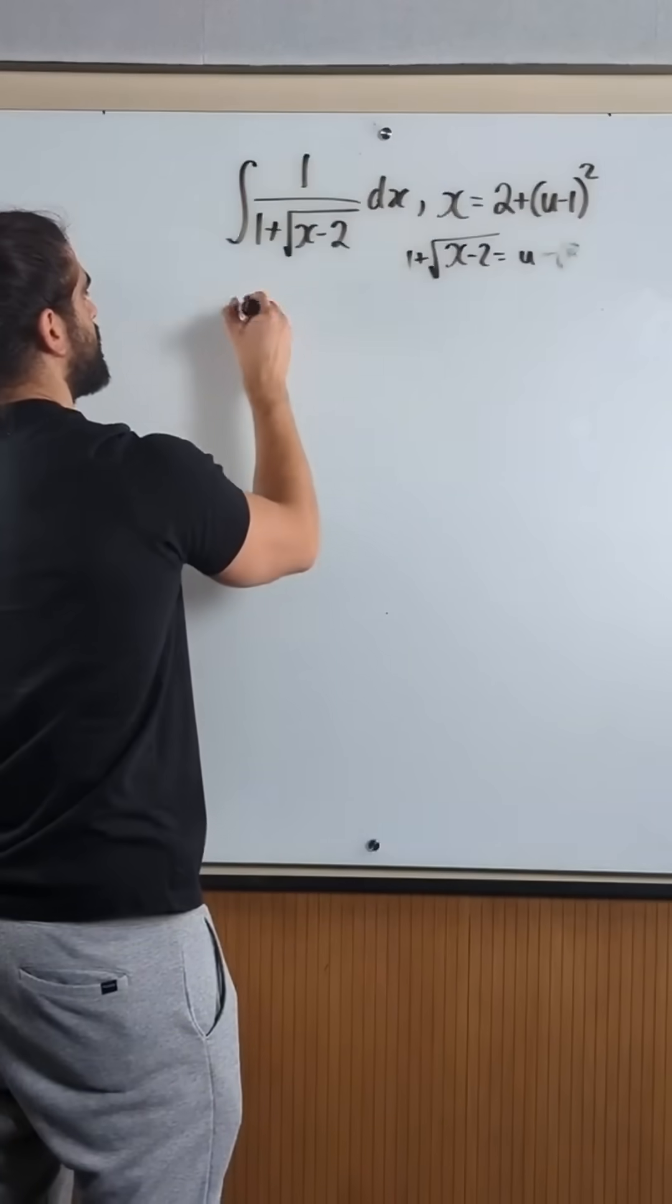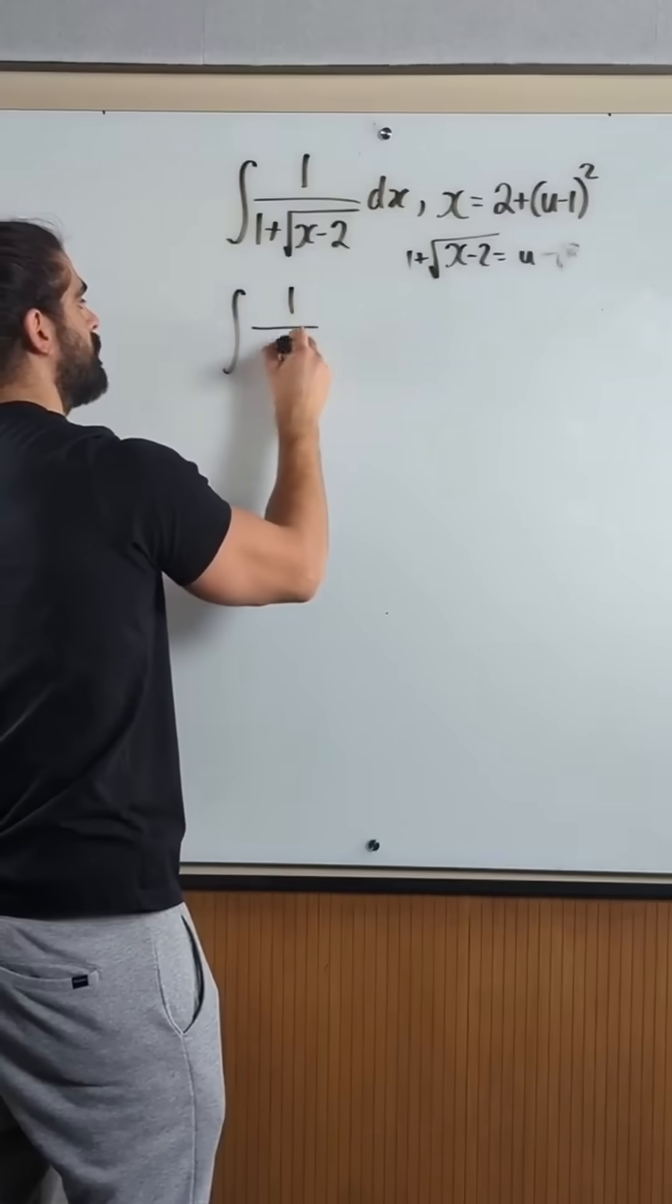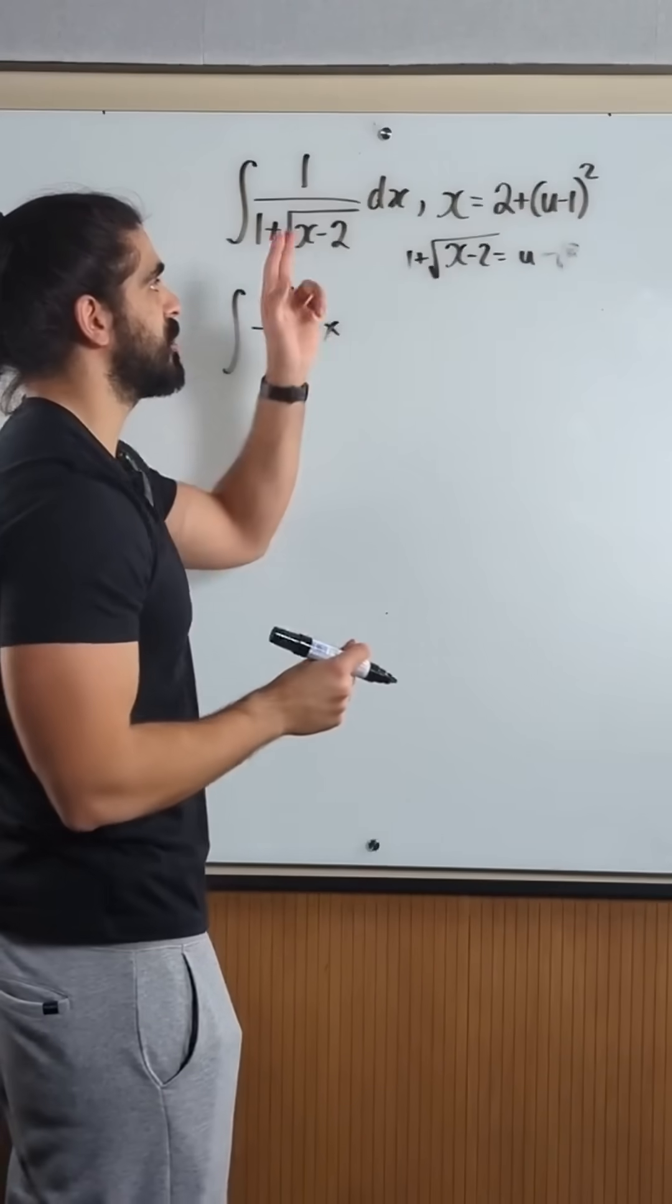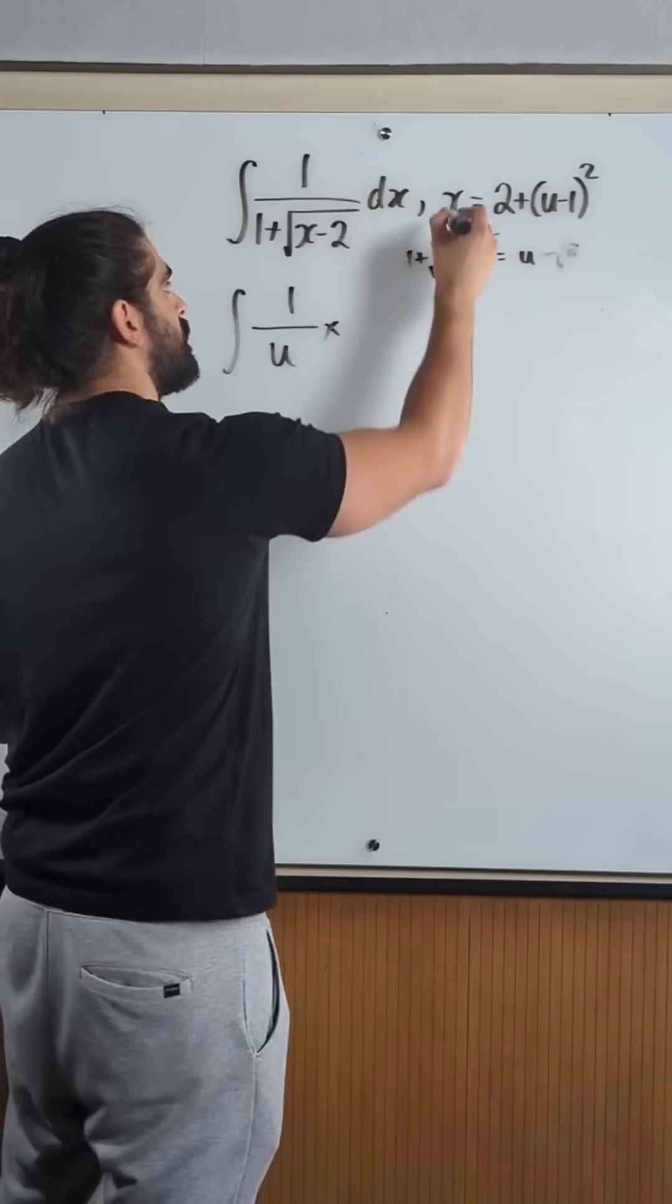Okay, so that is the denominator, so it becomes the integral of 1 over u times, but then we need to change dx into du by differentiating this.